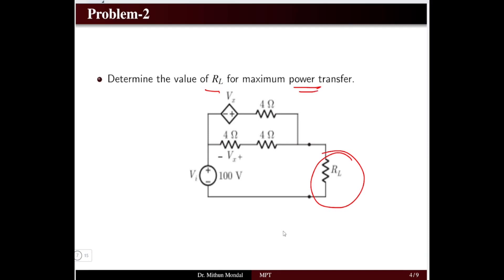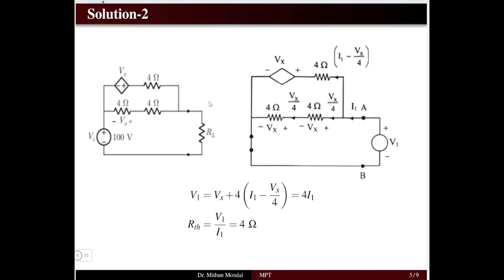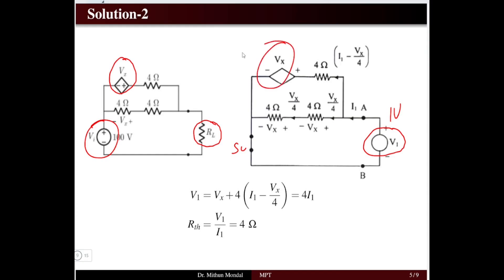Problem 2: Determine the value of load resistor RL for maximum power transfer. Since RL = Rth, we need to find the equivalent Thevenin resistance. The circuit contains a dependent voltage source, so we cannot simply short the sources. Instead, we connect a test voltage source V₁ (1 V) at the terminals, short the independent voltage source, and find the current drawn to compute Rth.